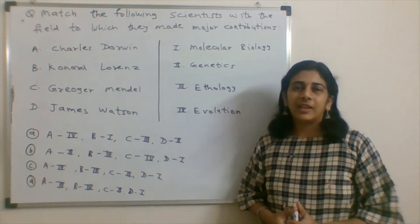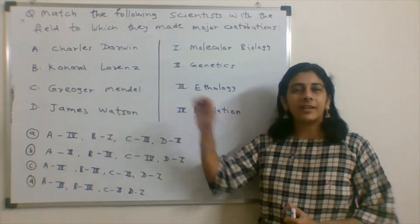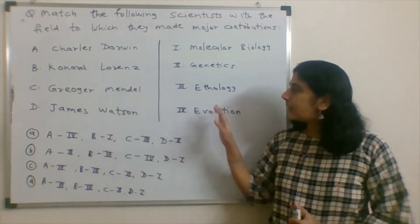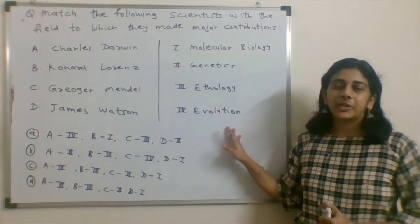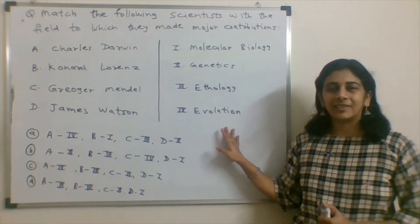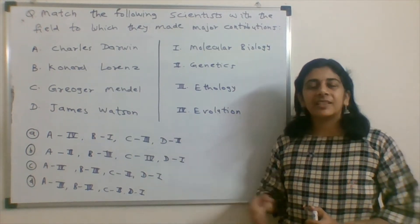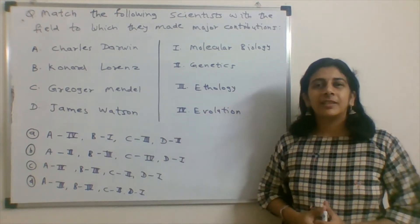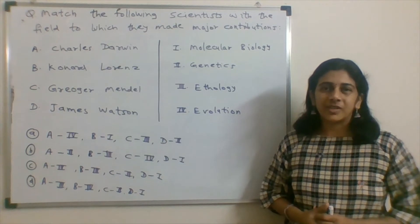Match the following question hai. In one direction, we have given the name of the scientist, and the other direction, we have given the major contribution. Different combinations are given in the options. So we need to match these scientists with their contributions.